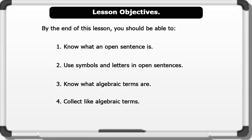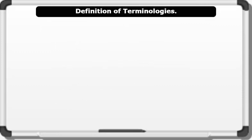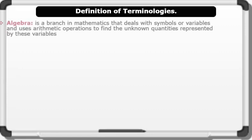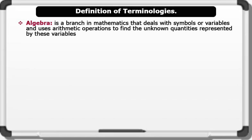Before we continue, let us define some words. For the purpose of this lesson, let's see the meaning of the following words. Algebra is a branch in mathematics that deals with symbols or variables, and uses arithmetic operations to find the unknown quantities represented by these variables.